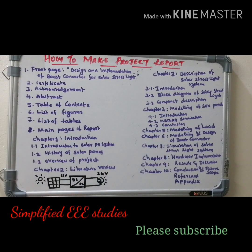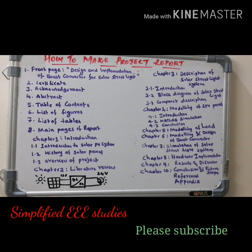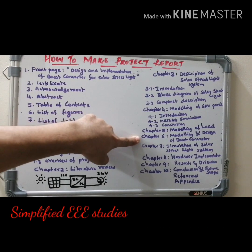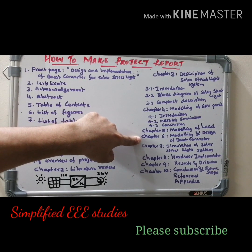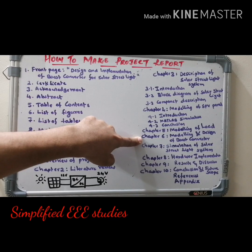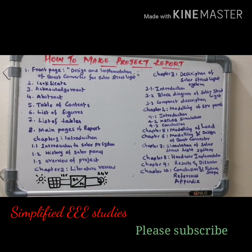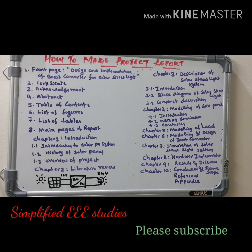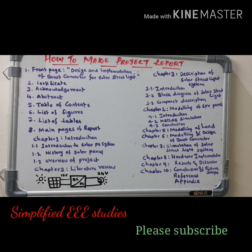Chapter 5 is the modeling of the load — what type of lamp was used and what modeling technique was applied, with equations clearly specified. Chapter 6 covers the modeling and design of the boost converter. Section 6.1 is the introduction to DC-DC converters and their importance. Section 6.2 covers the working of the boost converter. Section 6.3 covers the waveforms of the boost converter. Section 6.4 is the design of the boost converter, including equations — if using equations, please include the equation number. Section 6.5 covers the results.